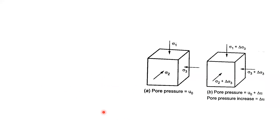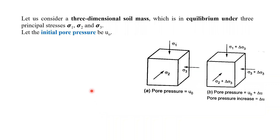Skempton derived one formula. Let us discuss how this formula can be derived. Let us consider a three-dimensional soil mass in equilibrium under three principal stresses: sigma-1, sigma-2, sigma-3, acting on a cubical soil element. In the beginning, once pressure is not applied, the pore water pressure will be zero because the principal stresses have not been applied.